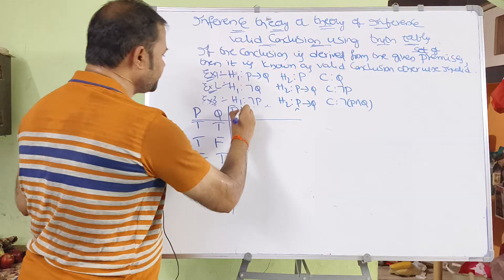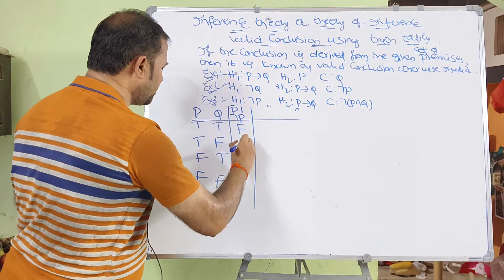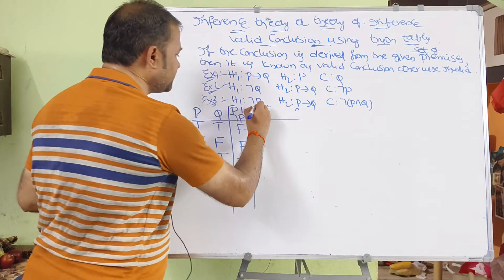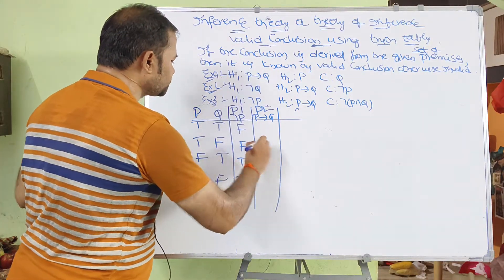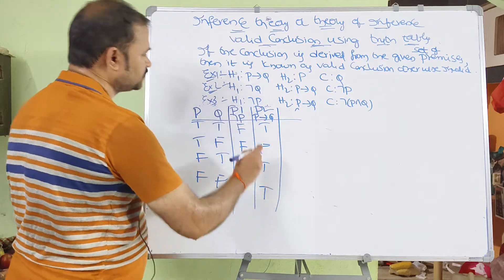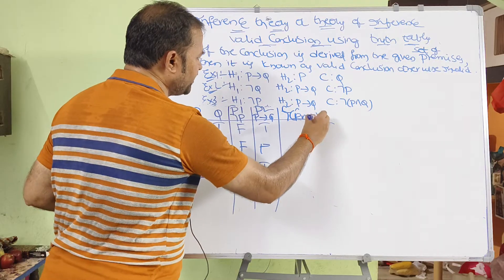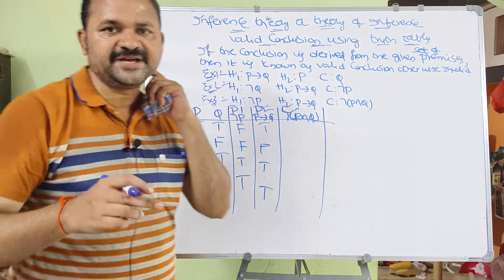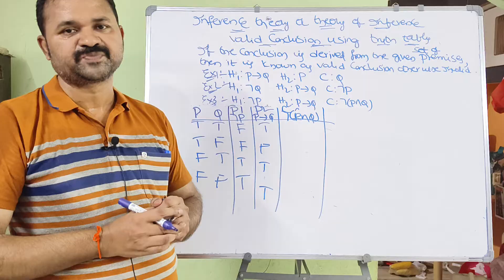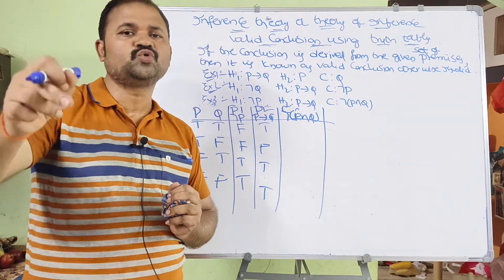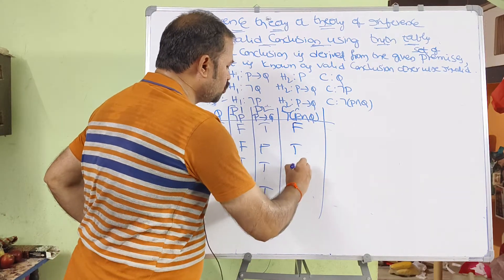Premise 1 is negation P, which gives: false, false, true, true. Premise 2 is P implies Q, which returns false for true-false and true otherwise. The conclusion is negation of (P and Q). P and Q returns true only when both P and Q are true, otherwise false — giving true, false, false, false. So negation of (P and Q) gives: false, true, true, true.